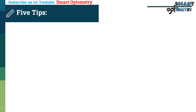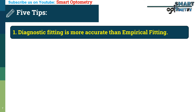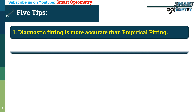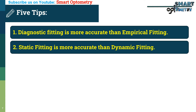Now, 5 tips about contact lens fitting. Don't forget to attempt quizzes of these topics in the last slide. Tip 1: Diagnostic fitting is more accurate than empirical fitting, because in empirical fitting we choose the lens parameter based on theoretical and mathematical data, which may not match with the real eye. So it's better to choose the lens parameter after a trial lens in the patient's eye, which is done in diagnostic fitting.